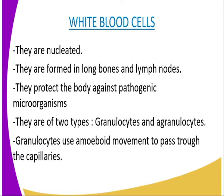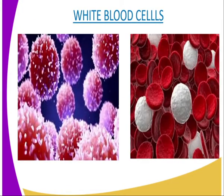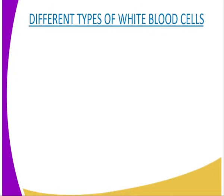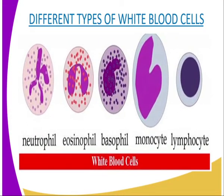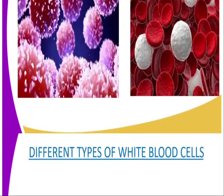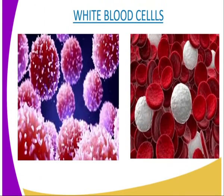Leukocytes, which are the white blood cells, are of two main types. The first type is the granulocytes, and the second are the agranulocytes. Granulocytes are also called phagocytes or polymorphs. Let us now look at the diagrammatic presentation of the white blood cells.